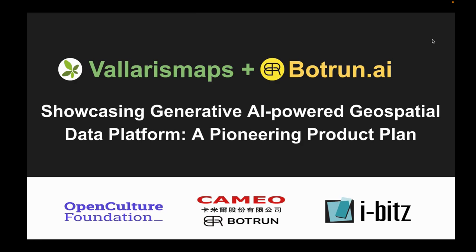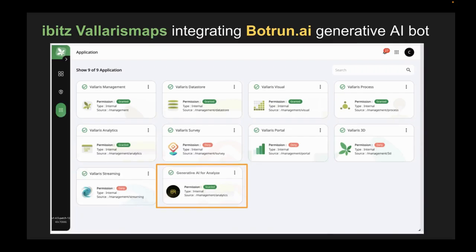Now I will introduce Valeris Maps plus Barron.ai. It is showcasing a generative AI-powered geospatial data platform — a pioneering product plan. We collaborate with Cameo, we collaborate with iBeats, and on this platform, Valeris Maps, we have integrated several data and visualization geospatial analysis tools.